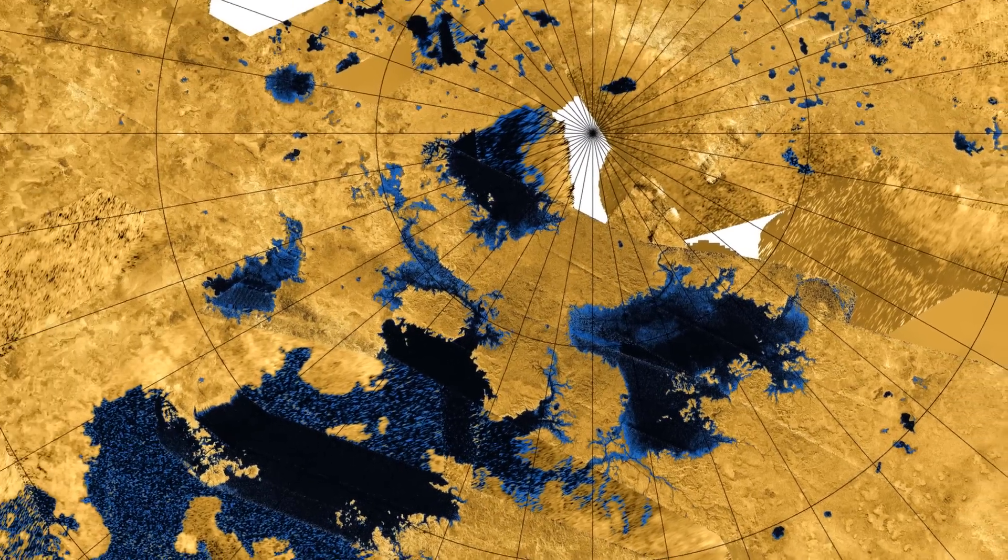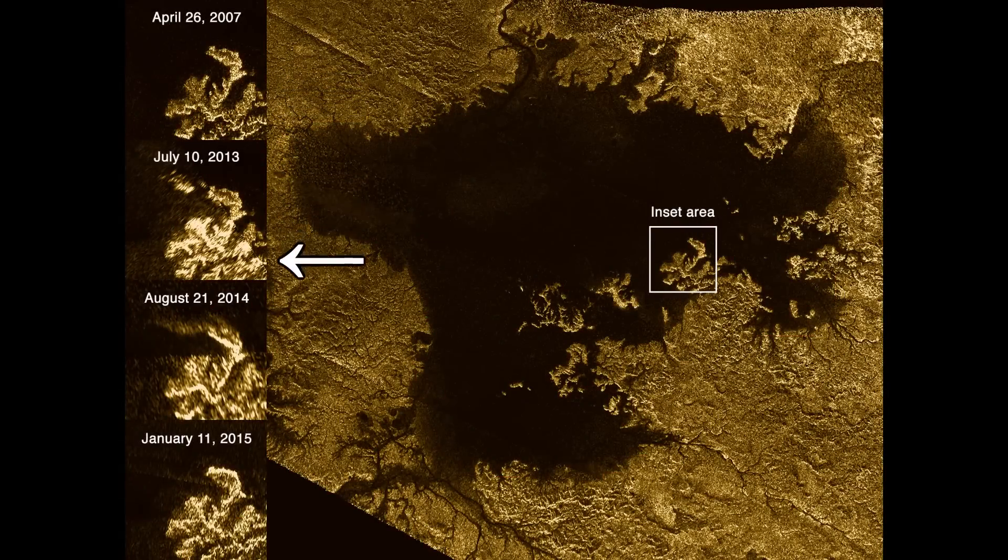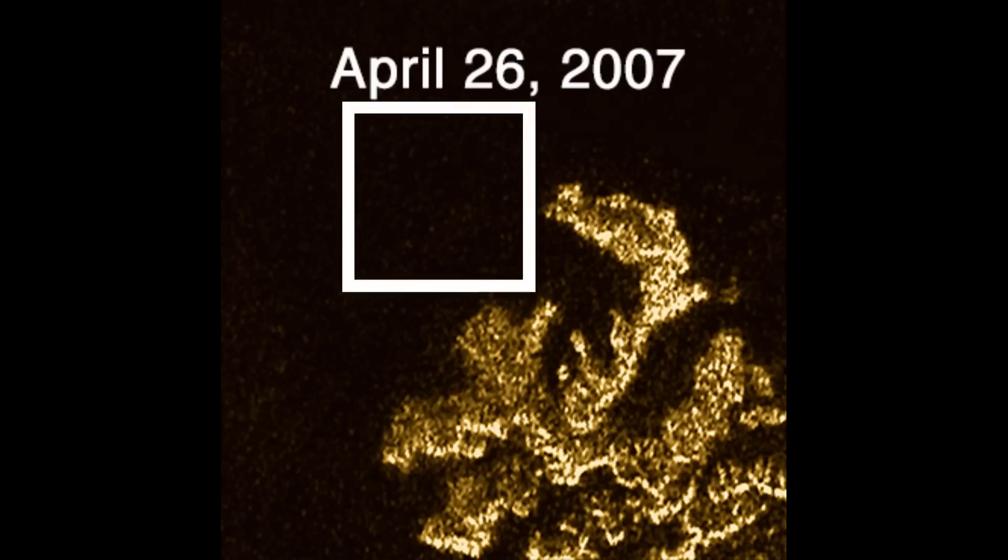This is where most lakes of Titan are. And what this image shows are four separate photographs of a coast that has this branching pattern. Close to this complex feature in 2007, there is no island visible next to it.